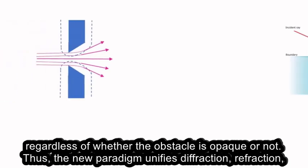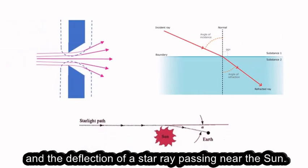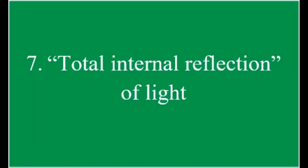Thus, the new paradigm unifies diffraction, refraction, and the deflection of a star ray passing near the sun. 7. Total Internal Reflection of Light.